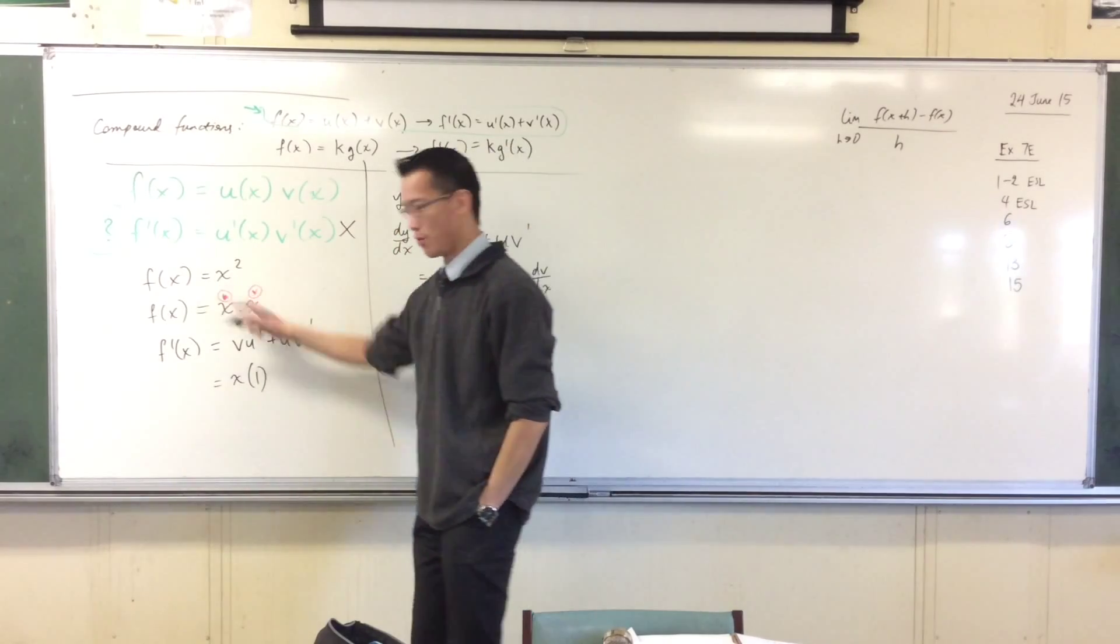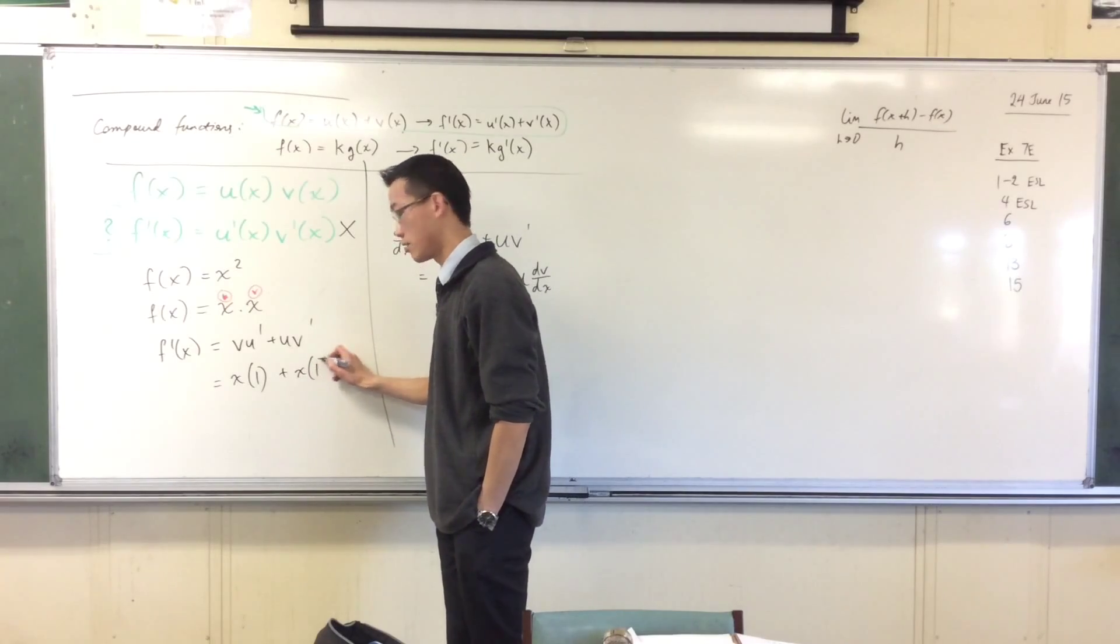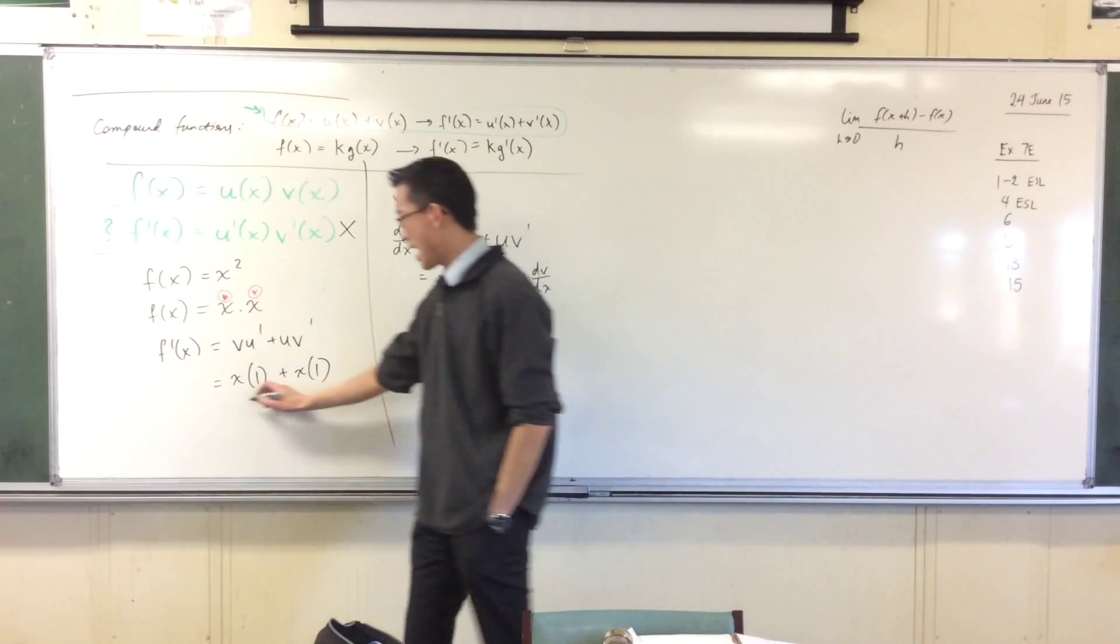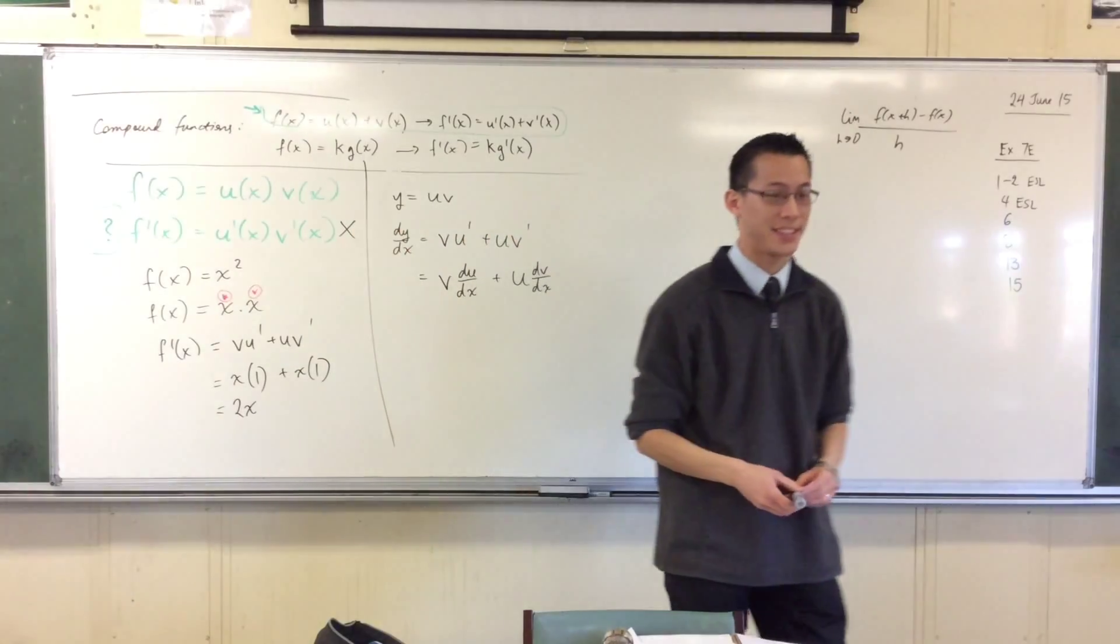And then because these two things are the same, we're gonna get exactly the same thing here. u is x and v dash is still one, right? And so there's x plus x, which sure enough is 2x as you expected, right?